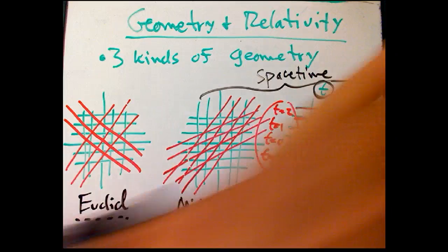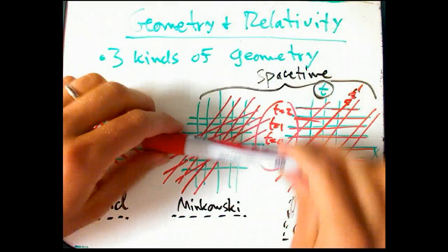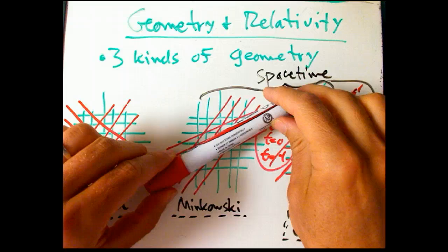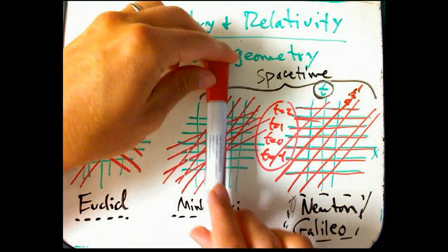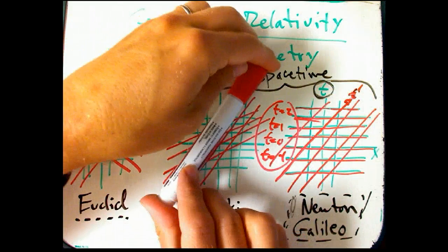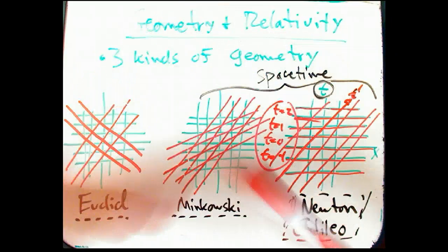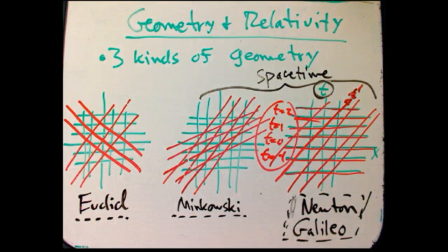In Minkowski geometry, when one axis, let's say the x axis, rotates up to be an x prime axis, the other axis does have to do something to go with it. It's just a little bit weird that it has to go toward it in the way that preserves the Minkowski scalar product.